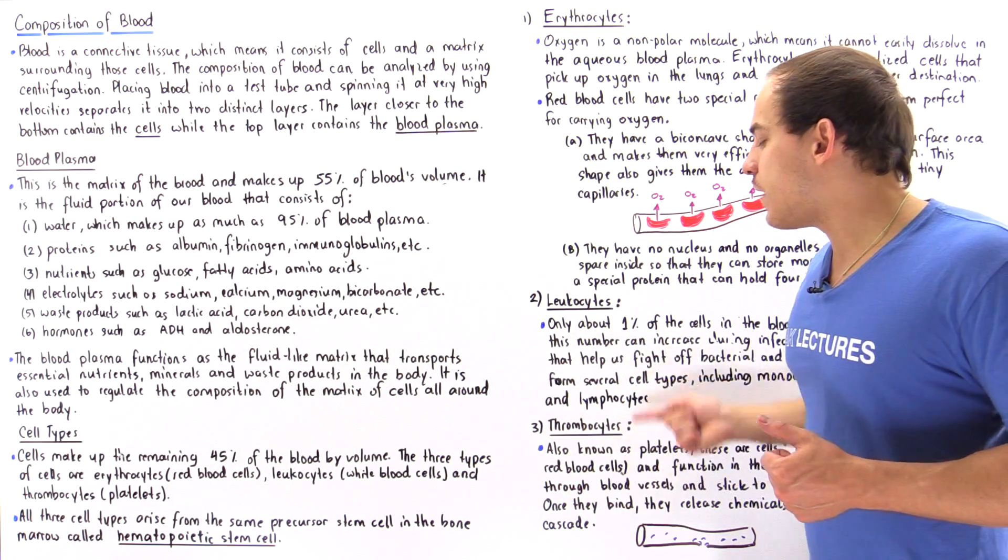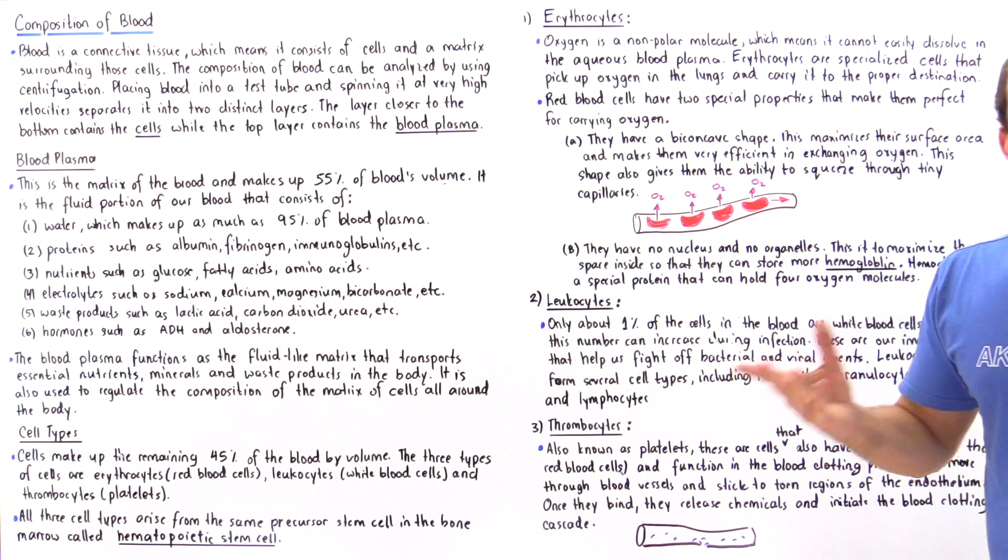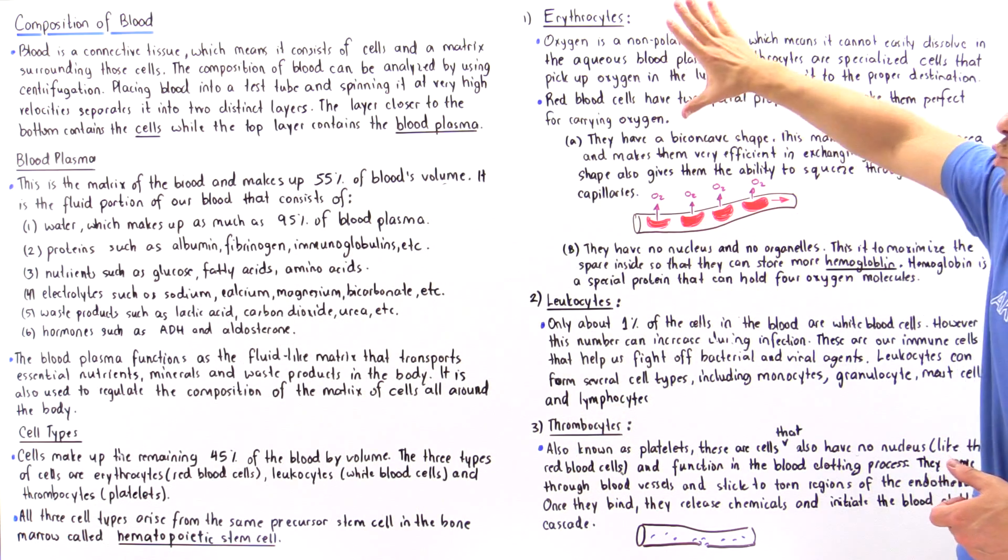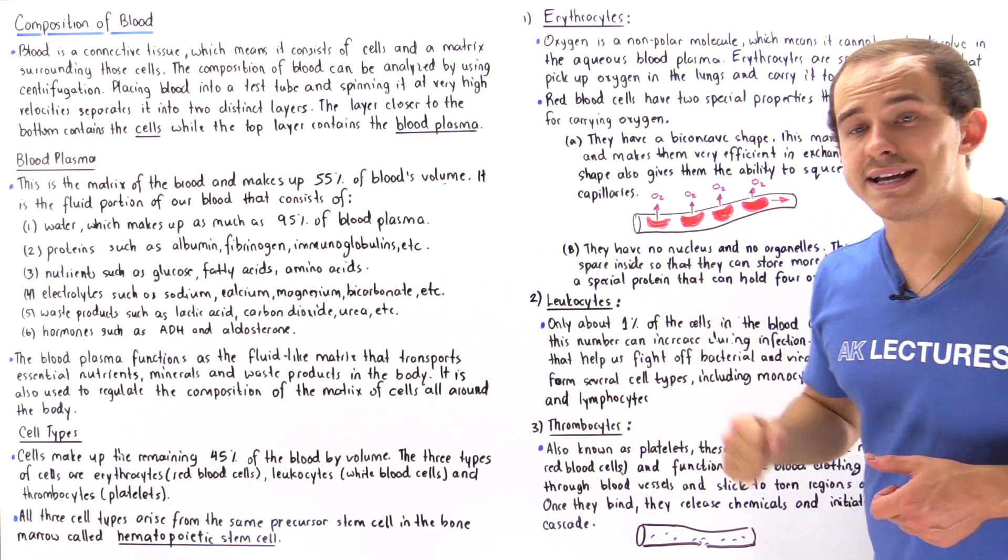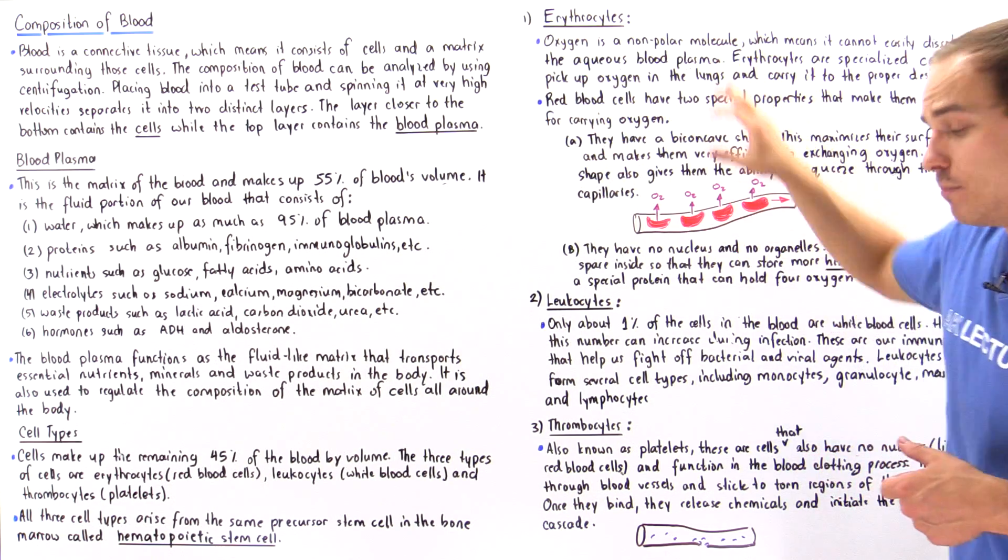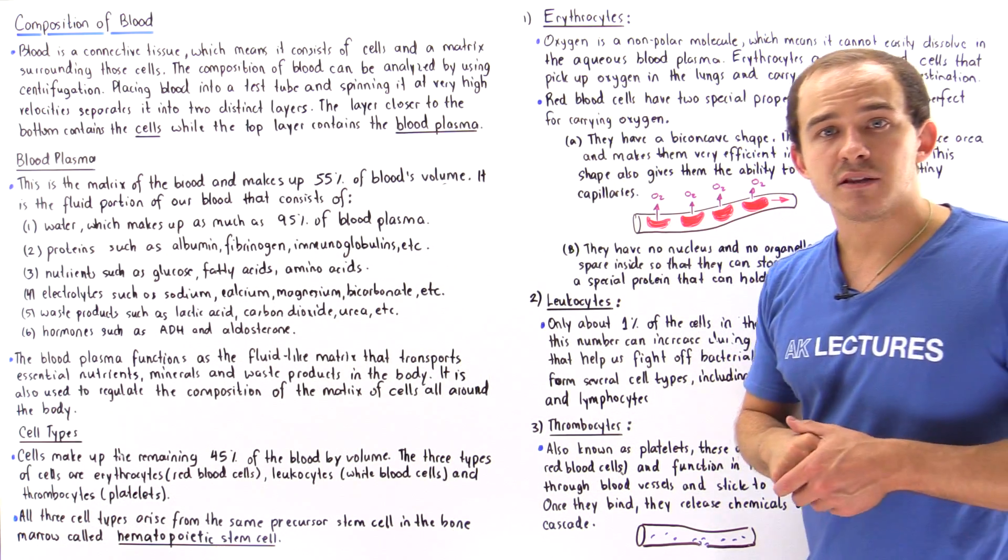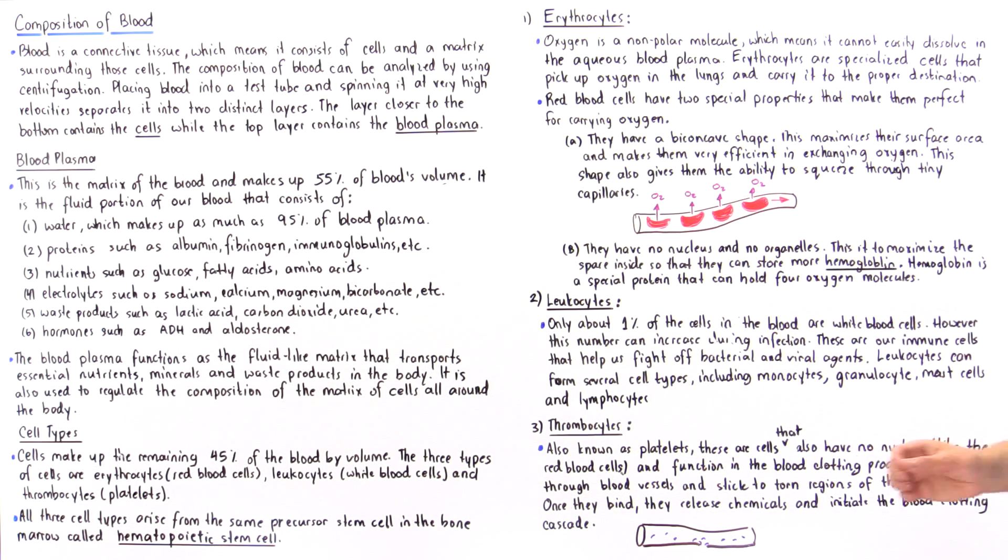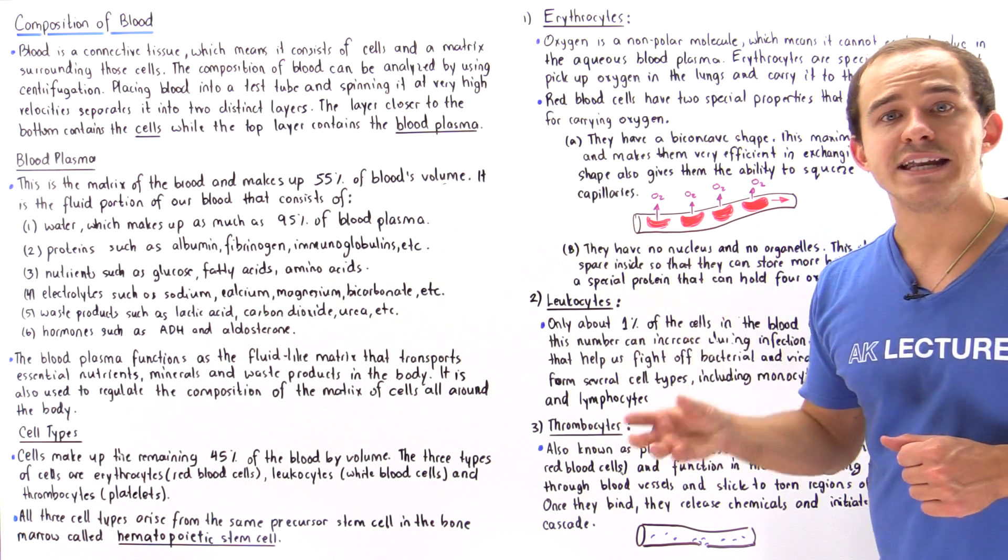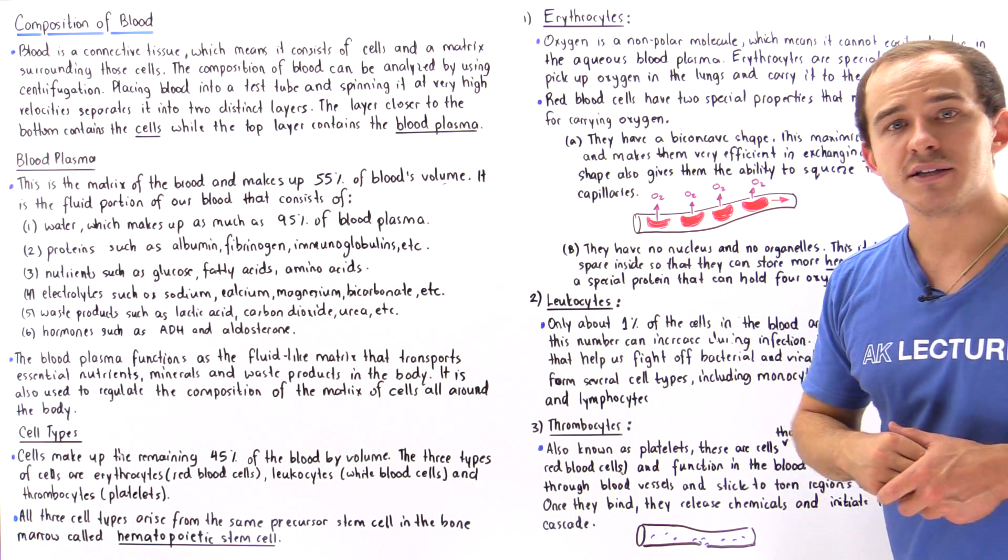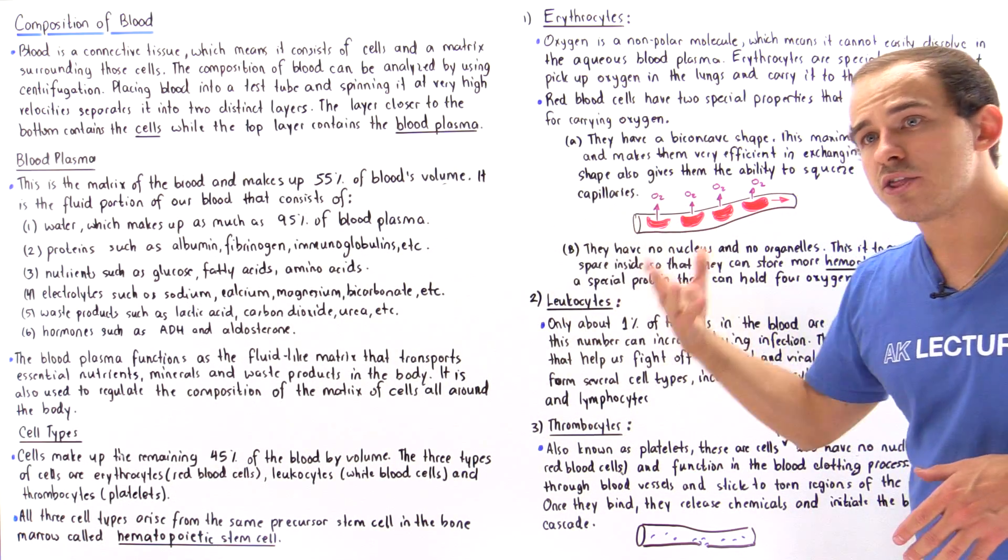Now let's move on to our thrombocytes also known as platelets. Now the ratio of thrombocytes to red blood cells in our blood is about 1 to 10. So we have more of these red blood cells than our platelets. Now just like these red blood cells, platelets also do not have any nuclei but they are smaller than these red blood cells and they have other organelles.